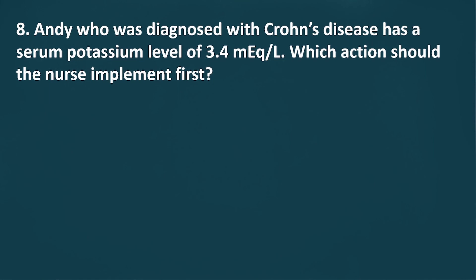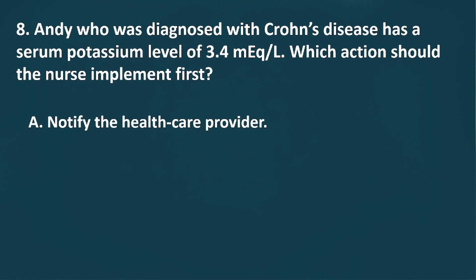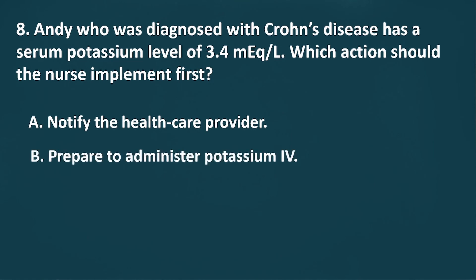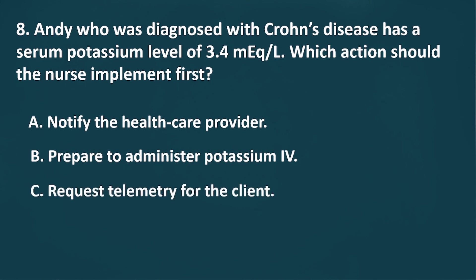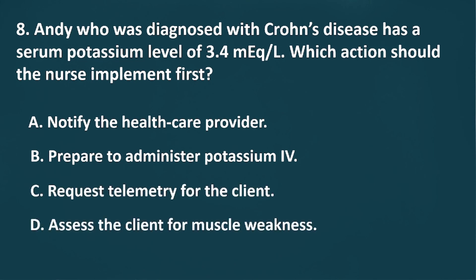Question Number 8: Andy, who was diagnosed with Crohn's disease, has a serum potassium level of 3.4 milliequivalents per liter. Which action should the nurse implement first? A. Notify the healthcare provider. B. Prepare to administer potassium IV. C. Request telemetry for the client. D. Assess the client for muscle weakness.